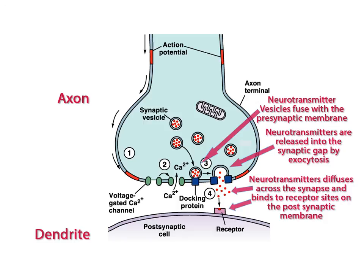After the neurotransmitter produces its effect, whether it's excitation or inhibition, the receptor releases it and the neurotransmitter goes back into the synapse. Enzymes degrade the neurotransmitter and recycle the chemicals to be used again.